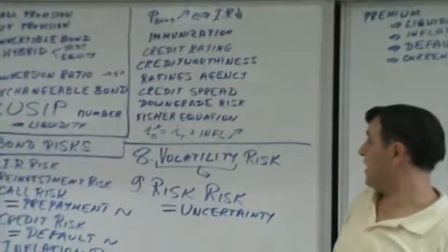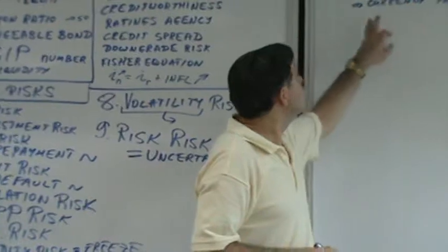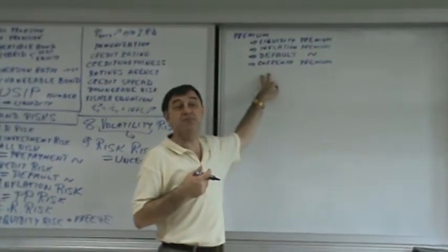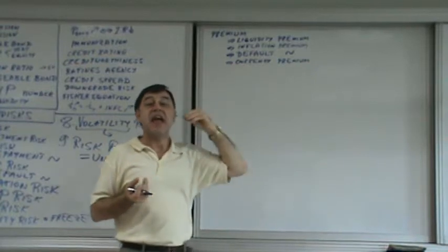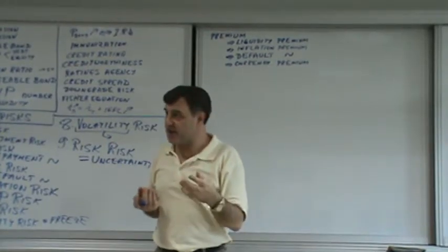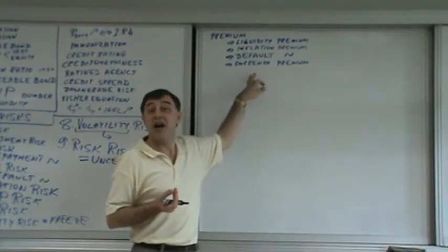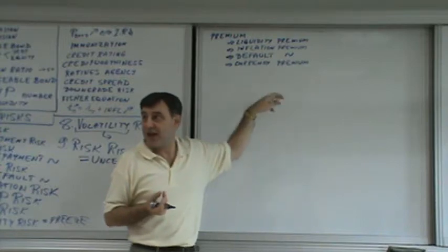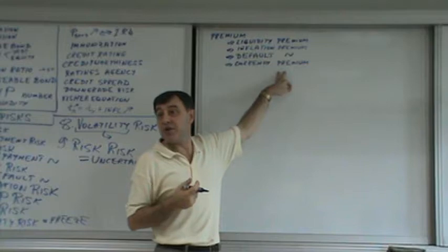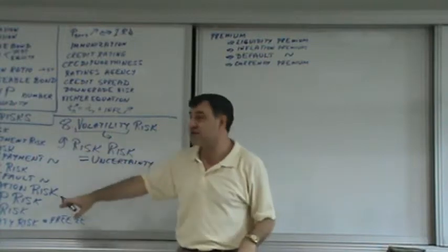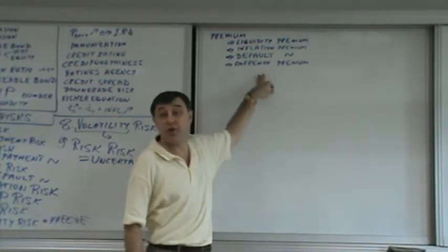These are just examples. Basically, what's important to understand is that every risk will have a compensation, and will have a premium component. For each of these risks, you will get a particular premium.